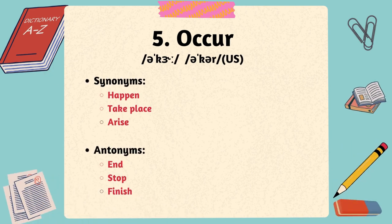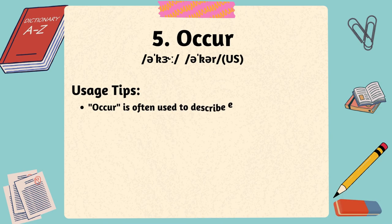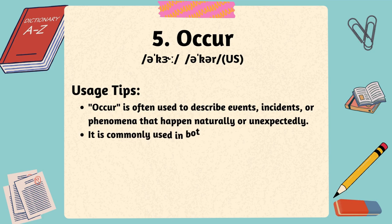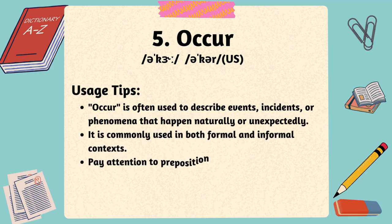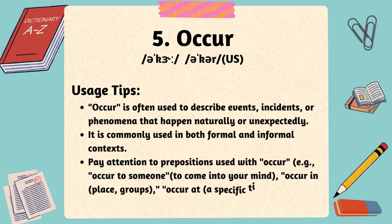Some antonyms for the word occur: end, stop, finish. Occur is often used to describe events, incidents, or phenomena that happen naturally or unexpectedly. It is commonly used in both formal and informal contexts. Pay attention to prepositions used with occur — for example, occur to someone, occur in, occur at — to convey the specific context of the event.